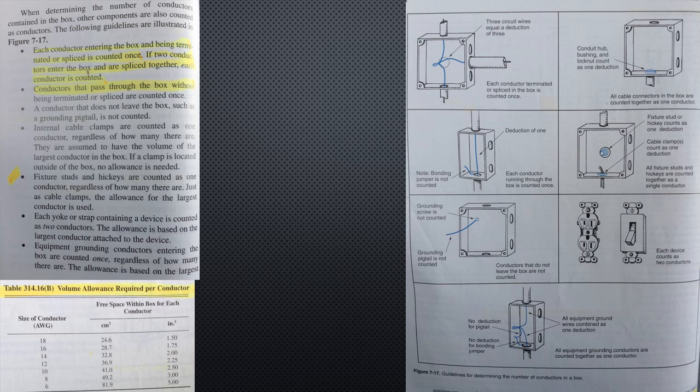Internal cable clamps are counted as one conductor, regardless of how many there are. They are assumed to have the volume of the largest conductor in the box. If a clamp is located outside of the box, no allowance is needed.